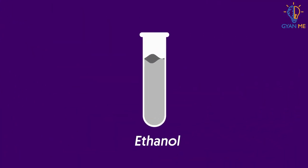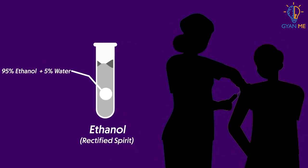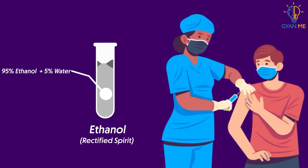A solution of ethanol containing 5% water is called rectified spirit, which is useful for disinfecting the outer surface of the body. Doctors use this rectified spirit before giving injections.